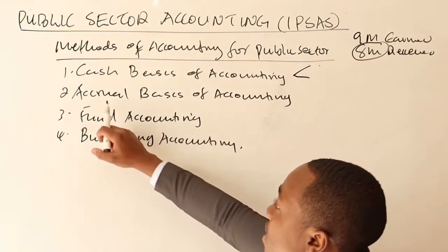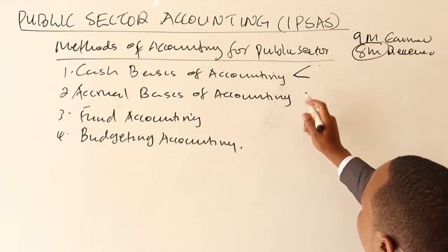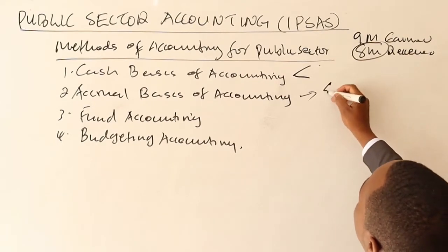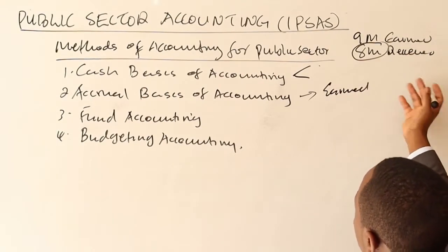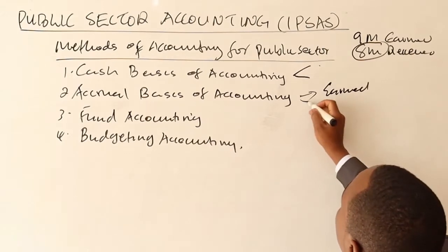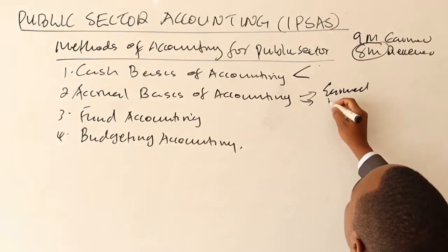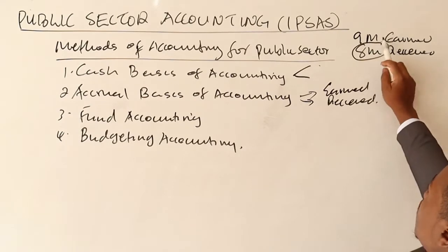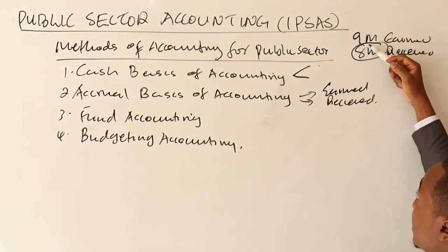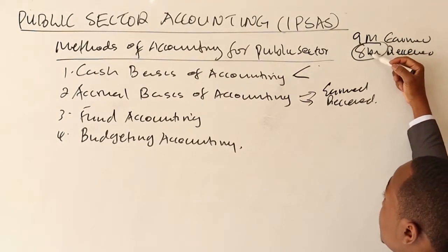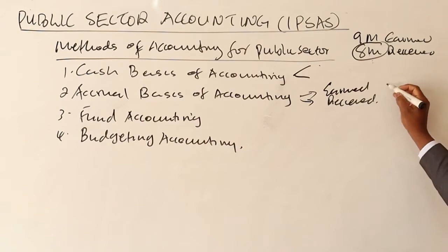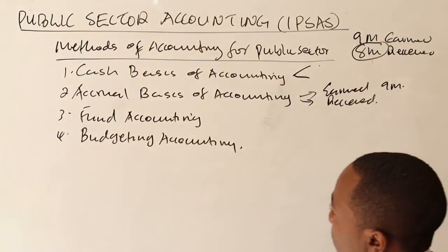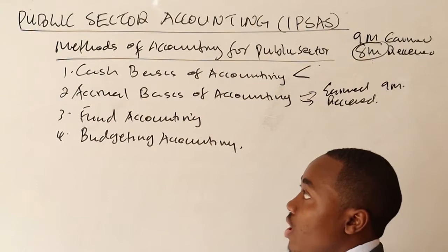Under the accrual basis of accounting, you record what you earned rather than what you received. For example, if you earned nine million but during the year you only received eight million, under accrual basis you show nine million — what you earned — not what you received.